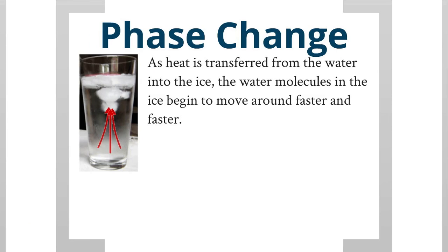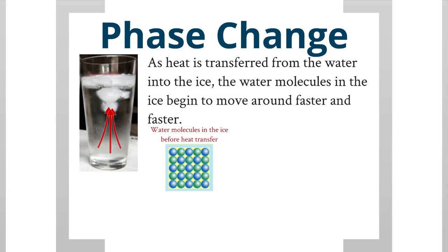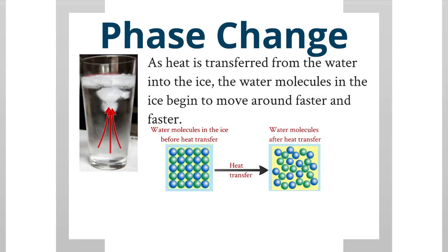As heat is transferred from the water into the ice, the water molecules in the ice begin to move around faster and faster because the ice is absorbing that heat. Before the heat transfer, the water molecules in the ice are in a rigid form, vibrating in place. After the heat transfer, they are moving around a whole lot more, sliding over each other — they have a lot more energy.